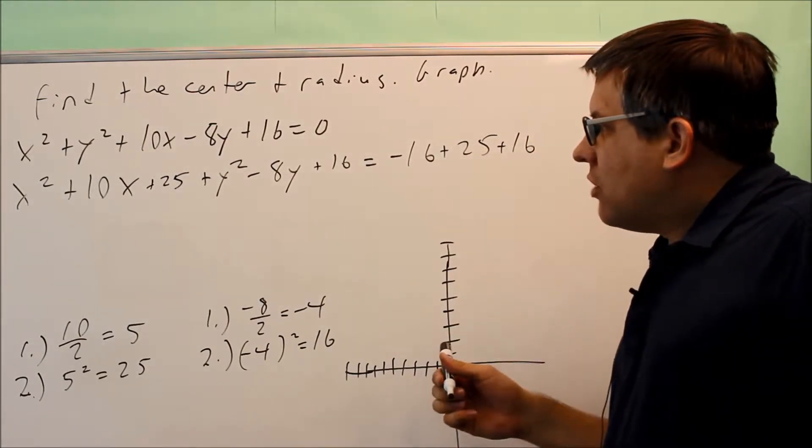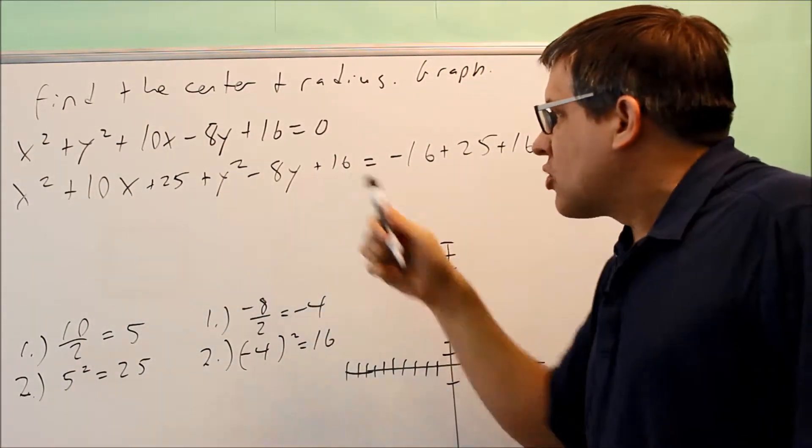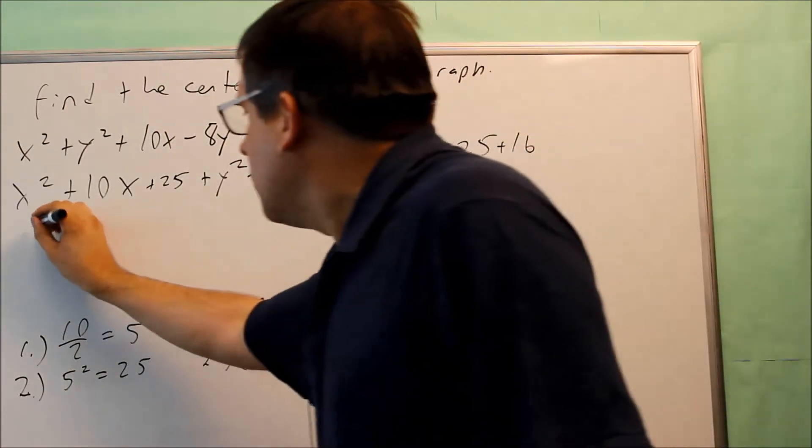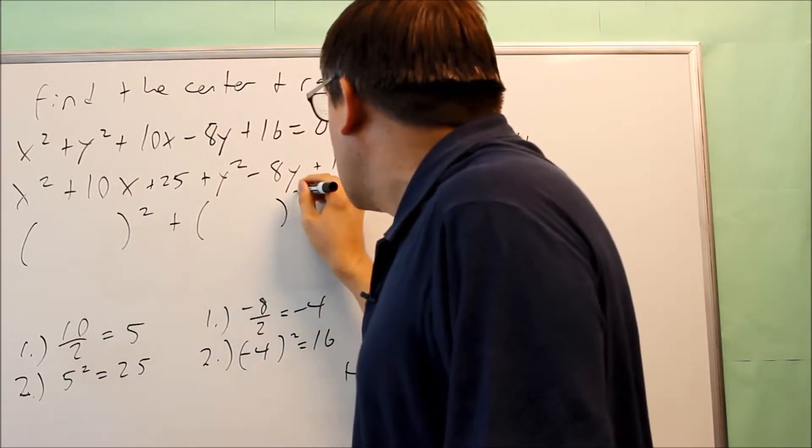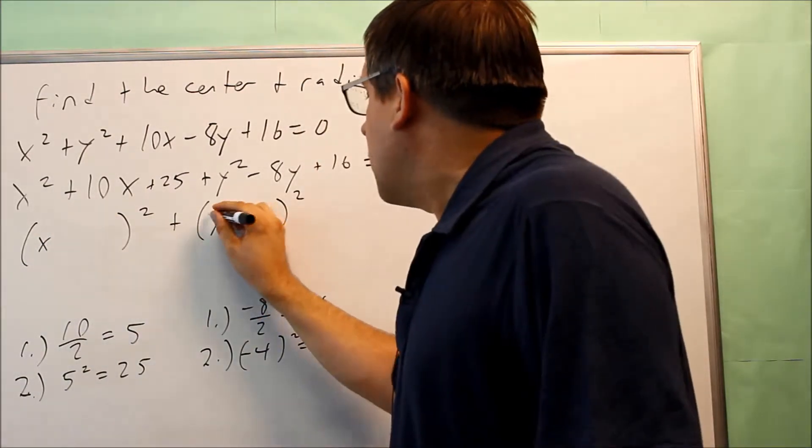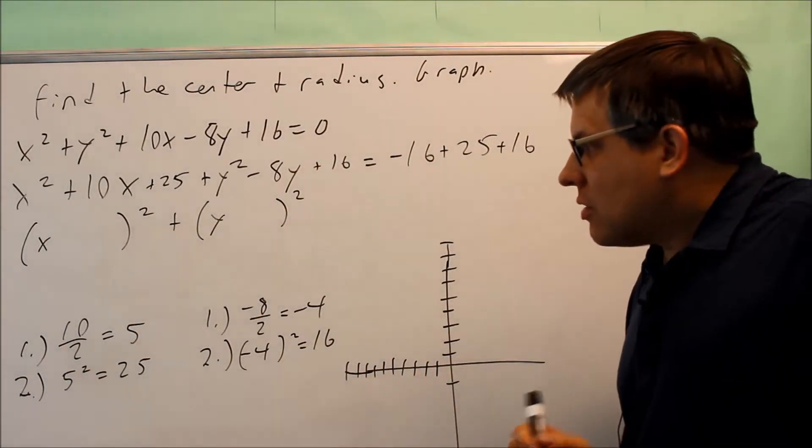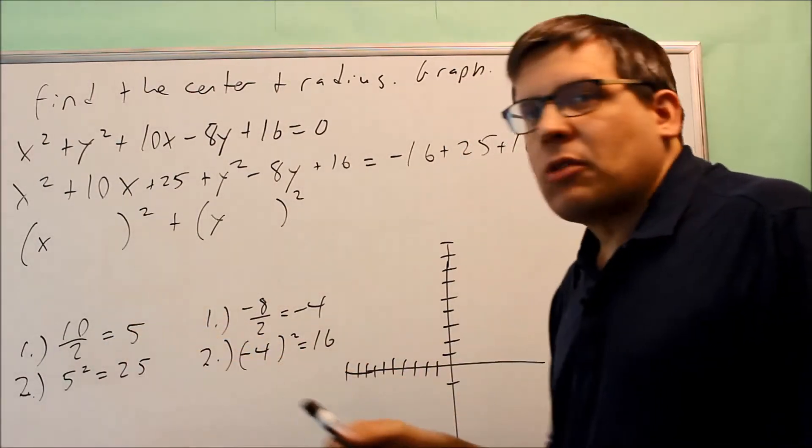So now, now that you've done this, we've created a perfect square here and a perfect square there and now we're going to factor it. Now, when you factor it, because it is a perfect square, it's going to look like this. You're going to have an x here and you're going to have a y there.